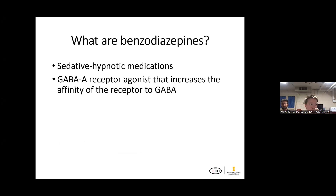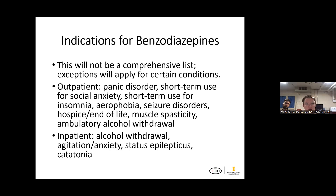Benzodiazepines — I may say benzos just because benzodiazepines is a mouthful. This class of medications is technically in the sedative-hypnotic class, and they are GABA-A receptor agonists. What they do is increase the affinity of the GABA receptor to GABA itself. These are good medications we can use for a lot of different things, but there are some harms associated with their long-term use, which I'll go over.